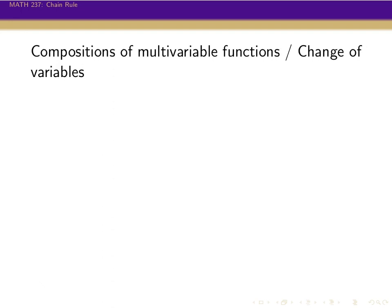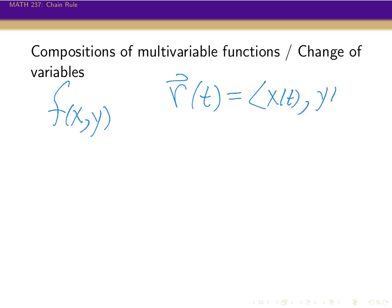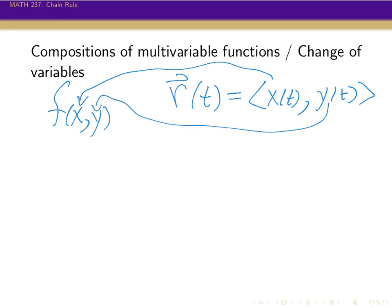One thing that can happen is we can start off with a function of two variables, f of x, y. Then for x and y, we could take some curve on the x-y plane, denoted by a parametrized vector function r of t. We can plug these component functions in for x and y into f of x, y, and after this composition, this becomes a function of only t.